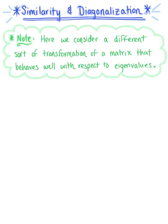Here we are exploring similarity and diagonalization of n by n matrices. In the previous section, we saw that triangular and diagonal matrices are nice in the sense that their eigenvalues are transparently displayed. So wouldn't it be pleasant if we could relate a given square matrix to a triangular or diagonal matrix in such a way that they had exactly the same eigenvalues? We are in luck, because in this section we are going to consider a different type of transformation of the matrix that does behave well with respect to eigenvalues.